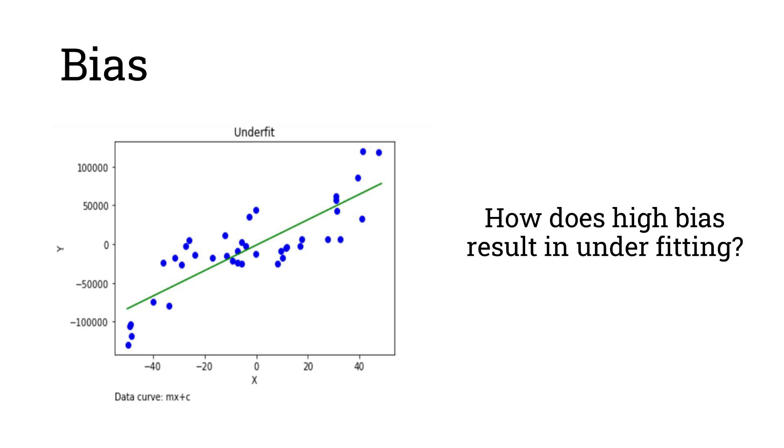In the similar manner, a highly biased model also doesn't consider the underlying logic which needs to be captured and hence it doesn't give an accurate value. So you can see this diagram as well. So the data curve is just one degree, mx plus c. So it's not capturing the entire curve. So if we had increased the polynomial degree, then it would have actually captured all the data and would have given us higher accuracy.